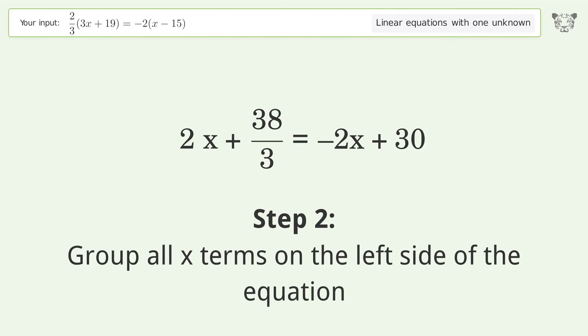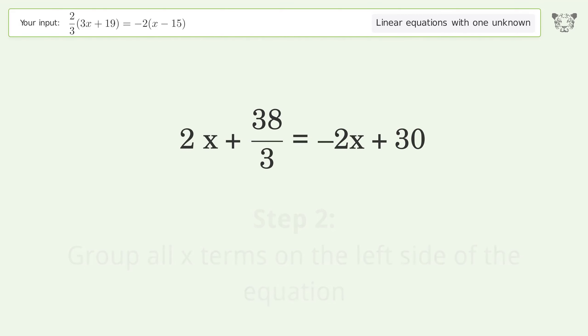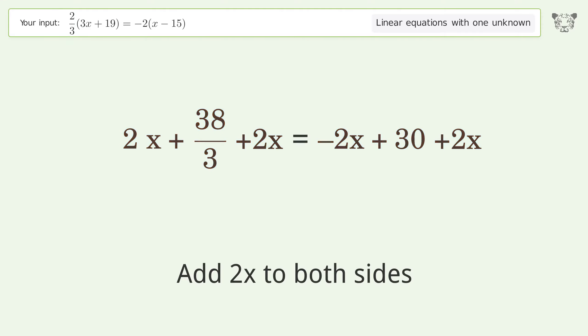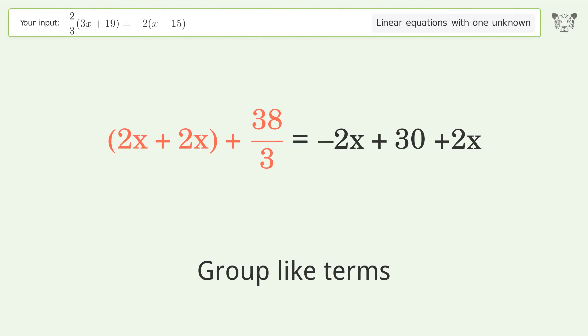Group all x terms on the left side of the equation. Add 2x to both sides. Group like terms. Simplify the arithmetic.